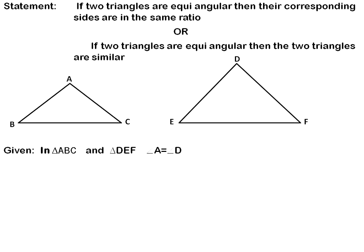So, angle A is equal to angle D. Then the second one: angle B is equal to angle E. Then the third one: angle C is equal to angle F. That is the given part — this is the first part of the statement.